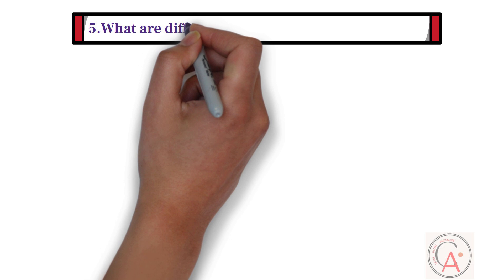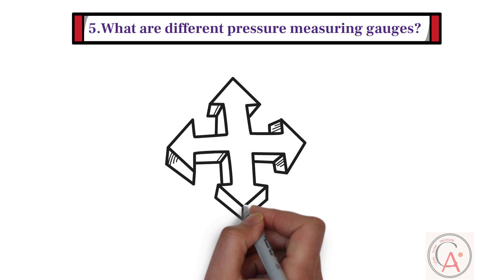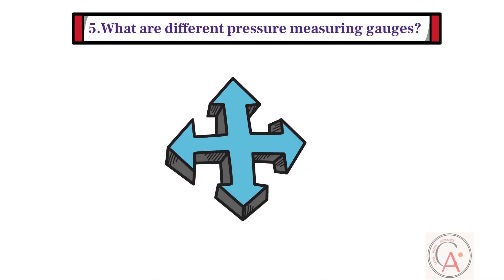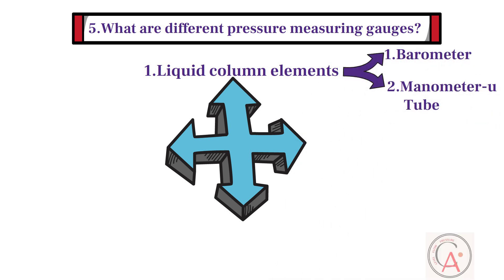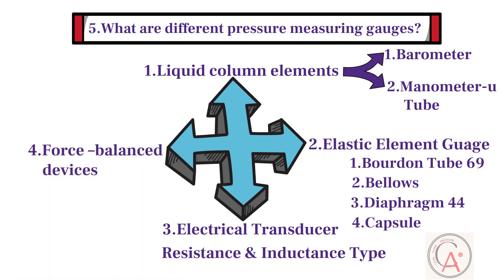The fifth question is, what are different pressure measuring gauges? There are four main types of pressure measuring gauges. The first type is liquid column elements, such as barometer and manometer U-tube. Second type is the elastic element gauge, such as Bourdon tube gauge, bellows, diaphragm, and capsule. Third type is electrical transducers, such as resistance and inductance type. Fourth type is force balance devices, such as deadweight gauge, ring gauge, and bell gauge.